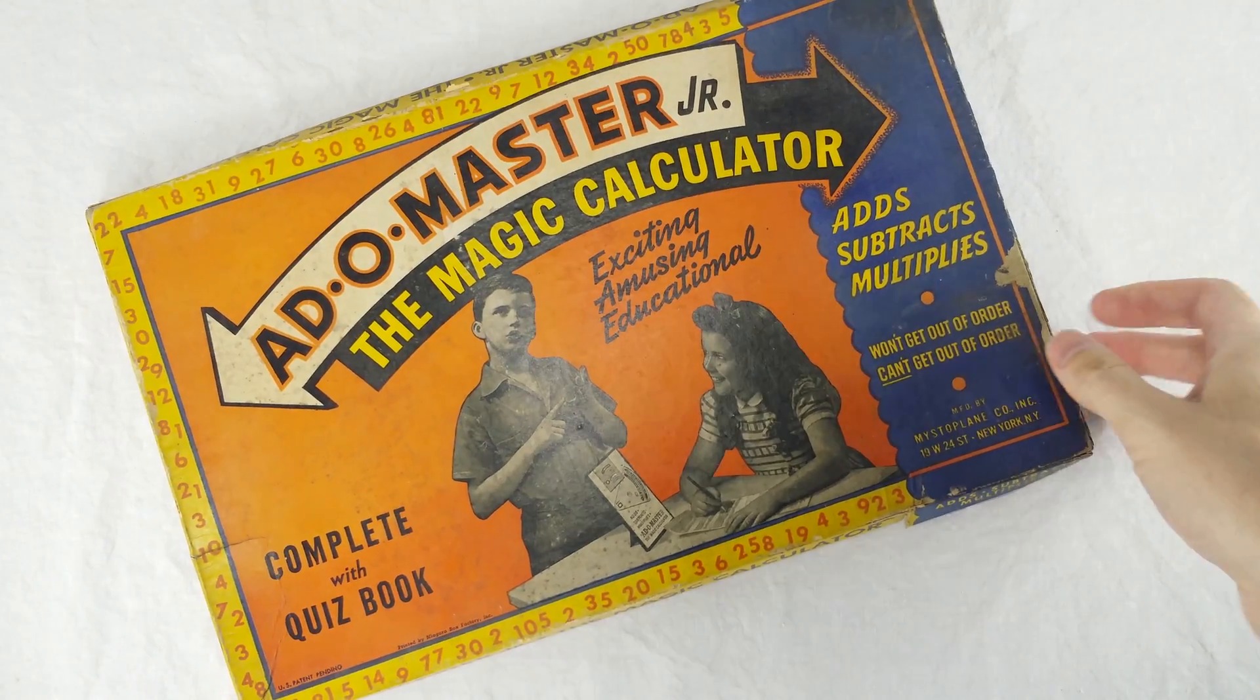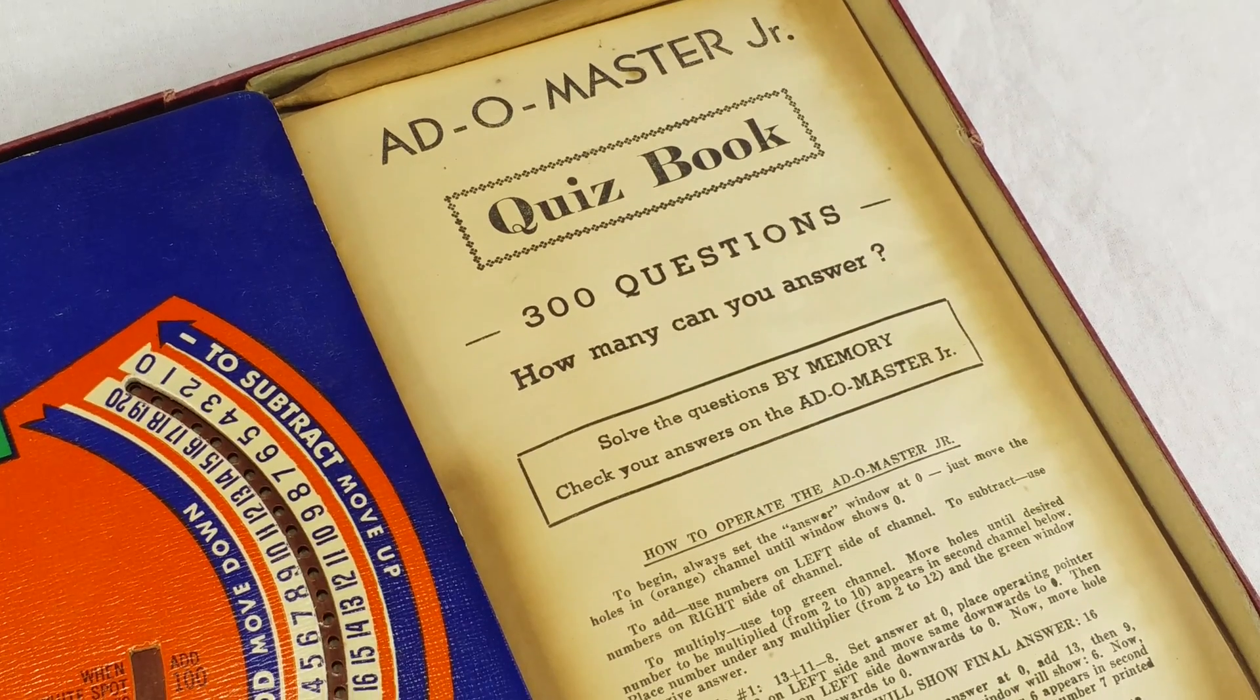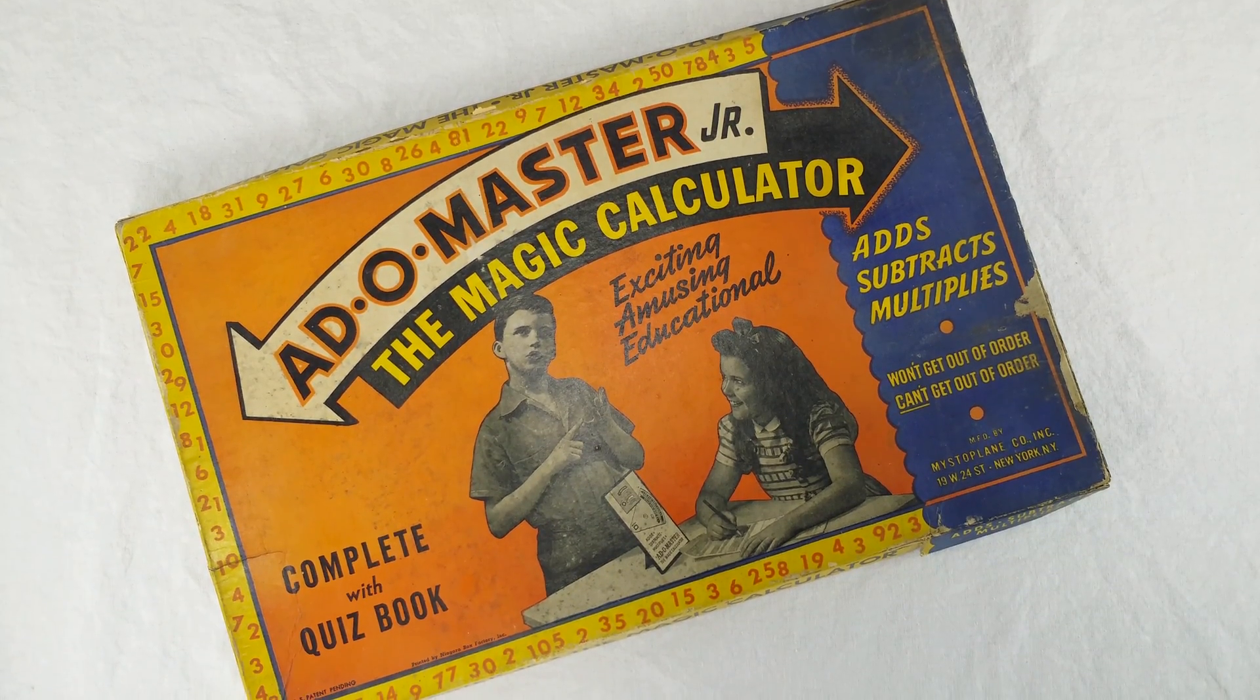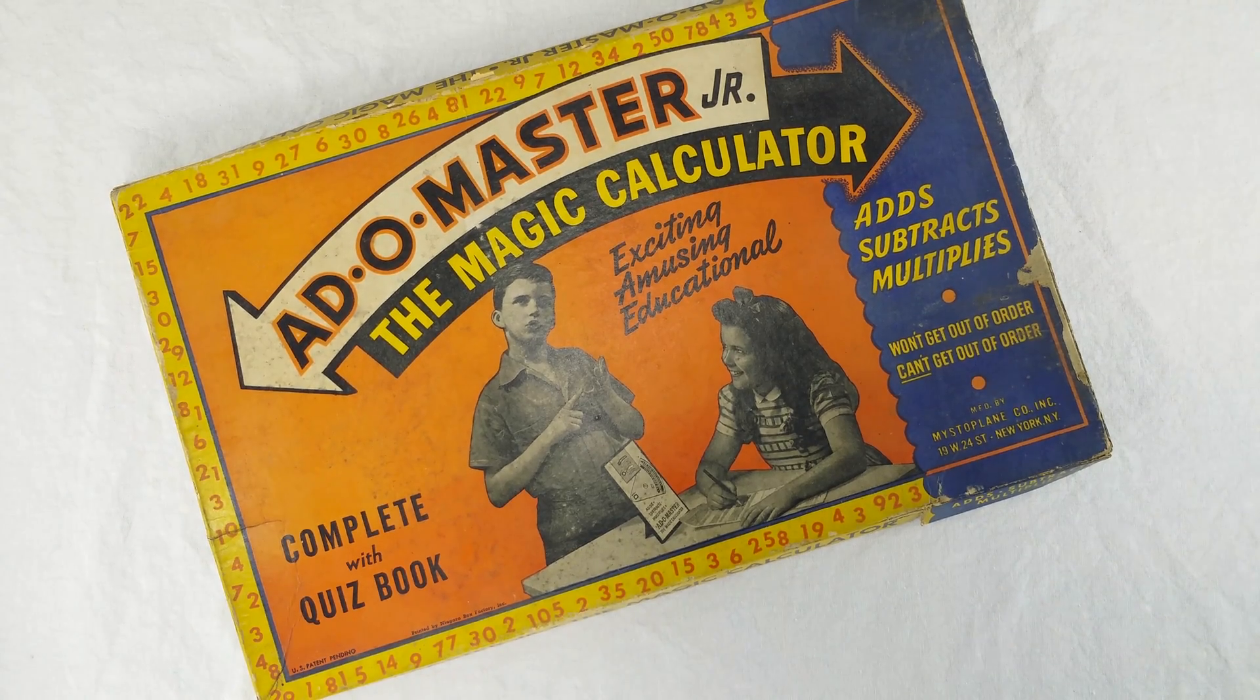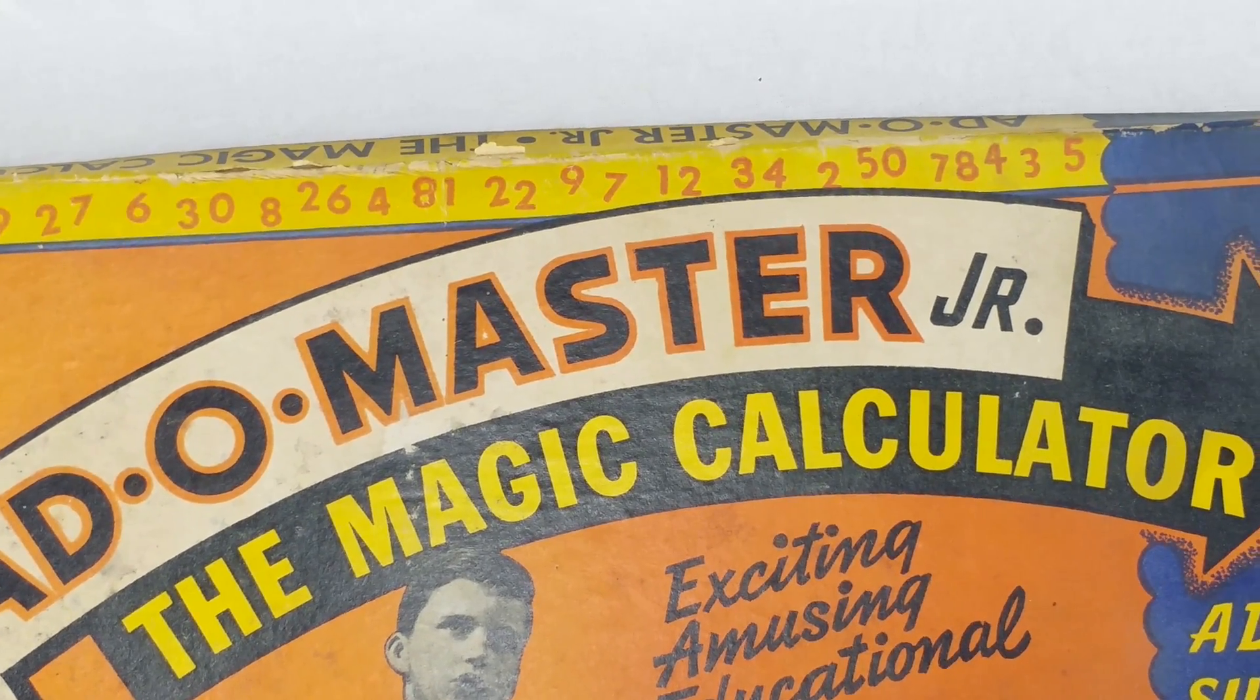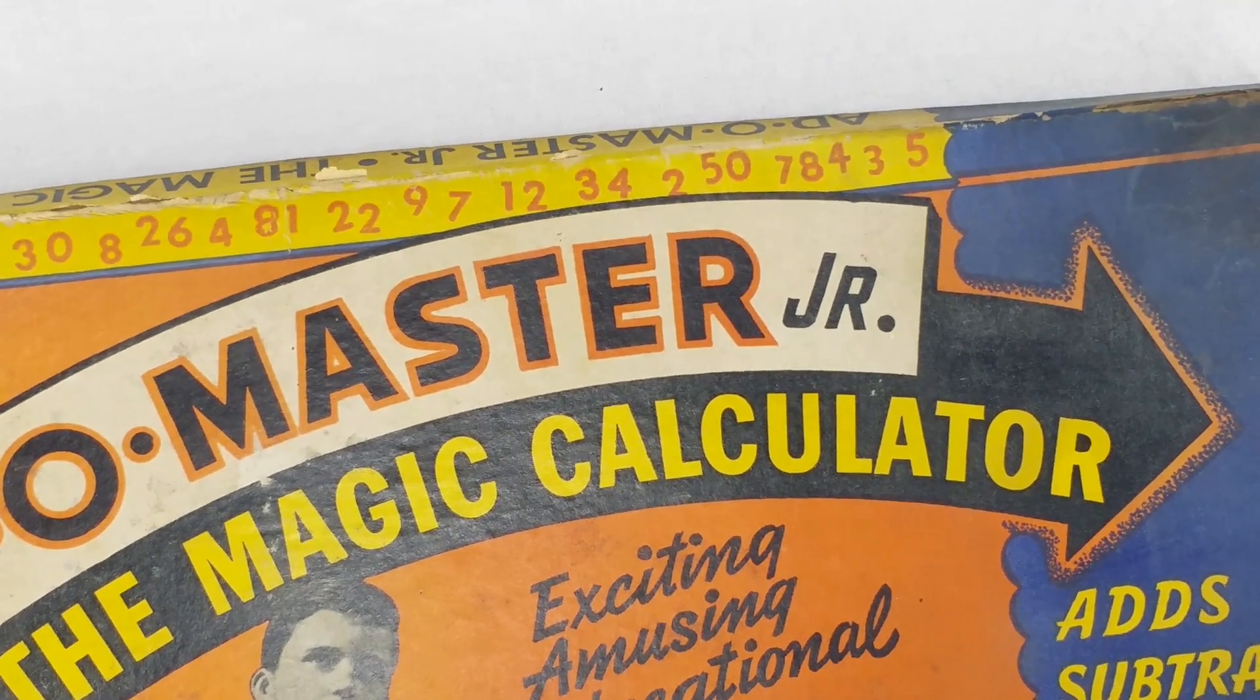Oh, did I mention I have the original box and the original Add-O-Master Jr. quiz book? The box is pretty classic. You got the two kids here around the border. You got random numbers. This is absolutely typical marketing for certain kinds of adding machines at the time - not the serious business ones, but the cute fun ones. You know, for the kids.